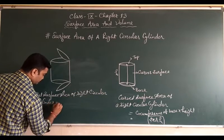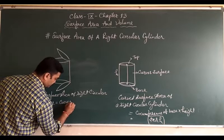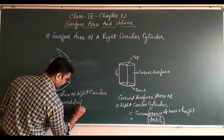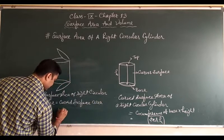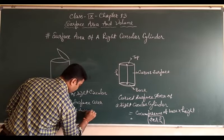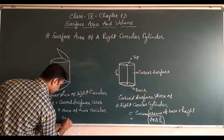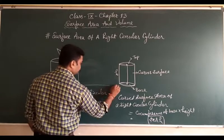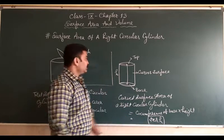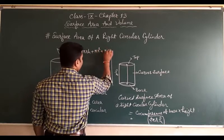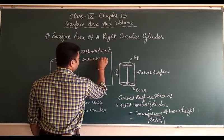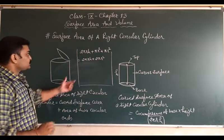So the total surface area of a right circular cylinder is equal to: curved surface area plus area of two circular ends. That means: 2πrh plus πr² plus πr², which gives us 2πrh plus 2πr². This is the total surface area of the cylinder.